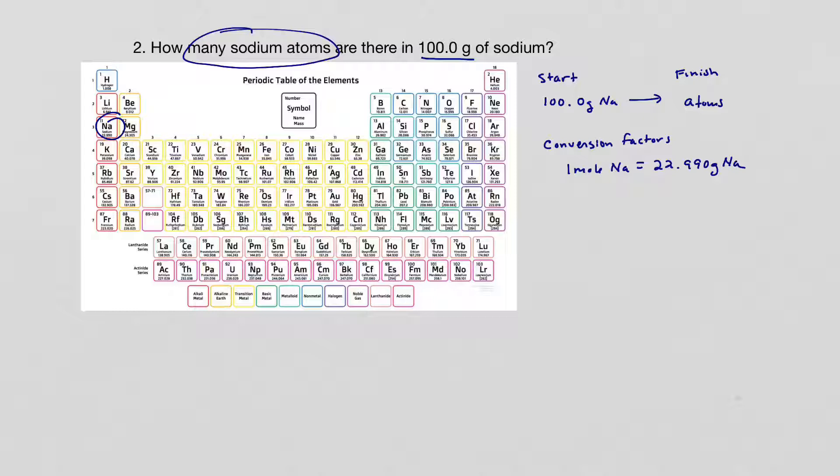And the good part about this conversion factor is it has units of grams, and grams can get me to moles. But my final answer is atoms. So I need another conversion factor. And luckily, I know that one mole of any element is the same thing as having 6.022 times 10 to the 23rd items or atoms of sodium. So we've got our second conversion, and it gets us from moles to atoms.